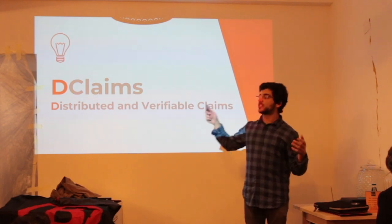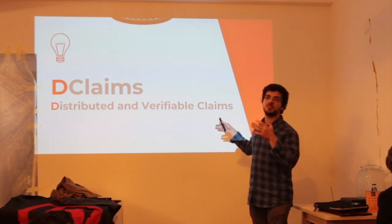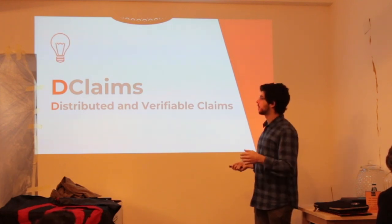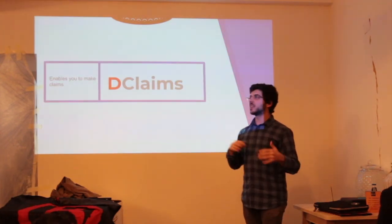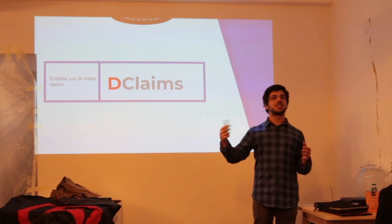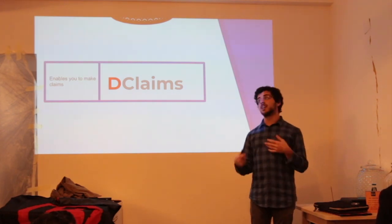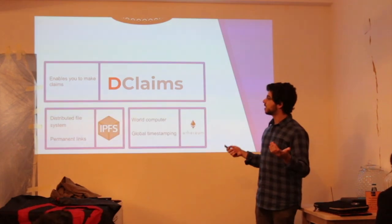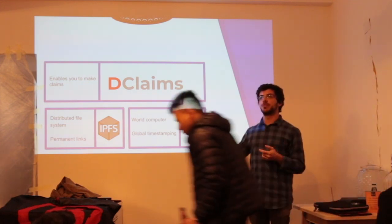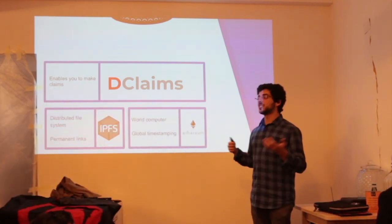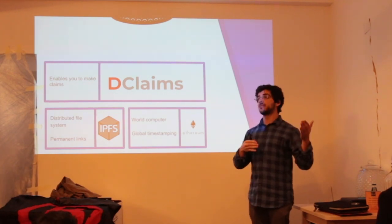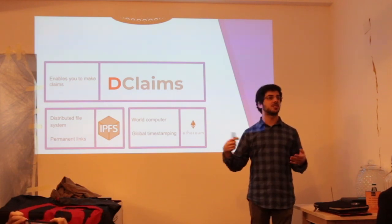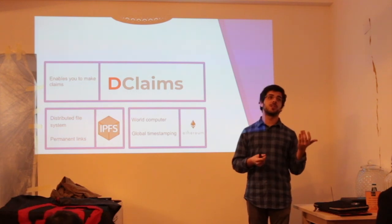D-Claims is a system that takes Verifiable Claims — the schema that W3C defines — and implements it in a completely distributed and trustless manner. It allows you to make a claim right now, send the identifier of that claim to anyone else, and that person can verify it. Claims are stored on IPFS, which is a distributed file system that gives us permanent links — the link of the claim will never be broken, and if the claim changes, the link changes as well, automatically giving you verification of integrity.